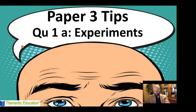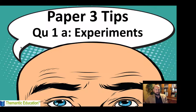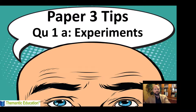G'day IB Psychologist, and welcome to another video tutorial. In this one we're going to look at some Paper 3 tips. We're going to focus on question 1a, and we're going to look specifically at the research stimulus in Paper 3 when it uses an experiment. I was explaining this to my class the other day and came up with this little tip, so I thought I'd make this video and share it with you all.